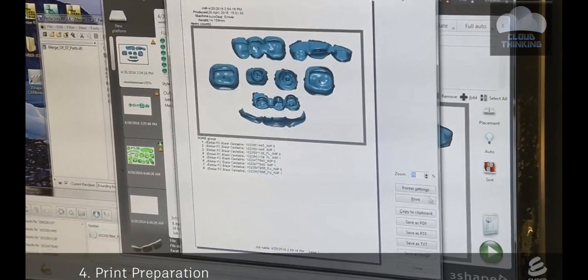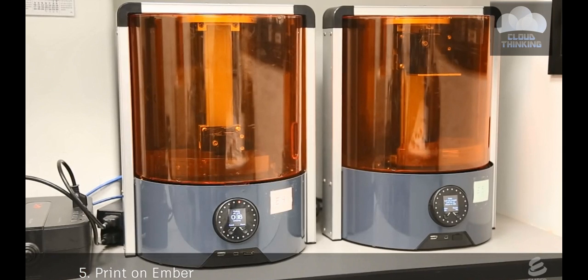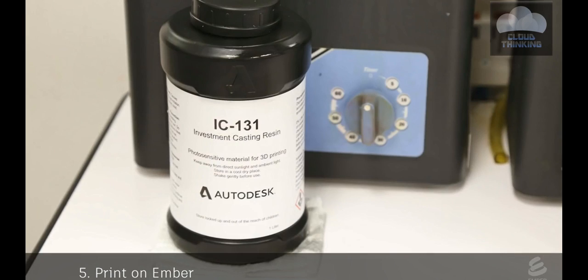Now this collection of crowns is sent to an Ember printer. A tech starts the printer. The print time is typically around 40 minutes. Glidewell uses a specially formulated resin, which will completely burn out later in the process.